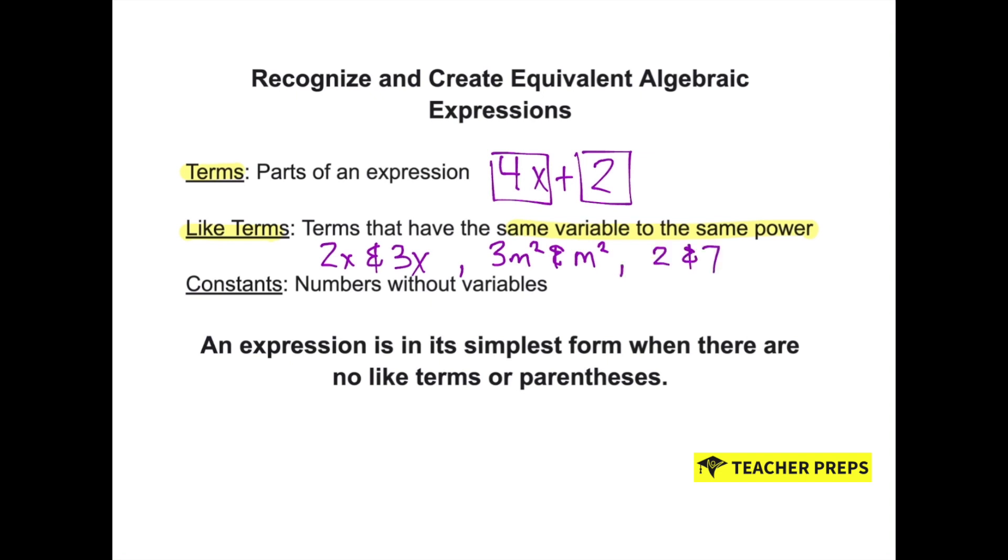And finally, 2 and 7 are like terms. Neither one of them has a variable. Those are both constants. Constants are numbers without the variable. So 2 and 7 are constants. An expression is in its simplest form when there are no like terms or parentheses.